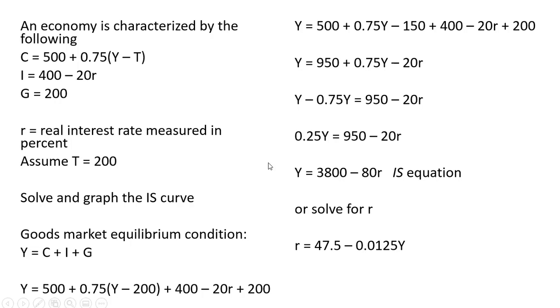So here we have our IS equation, r = 47.5 − 0.0125Y. So let's go ahead and graph it.